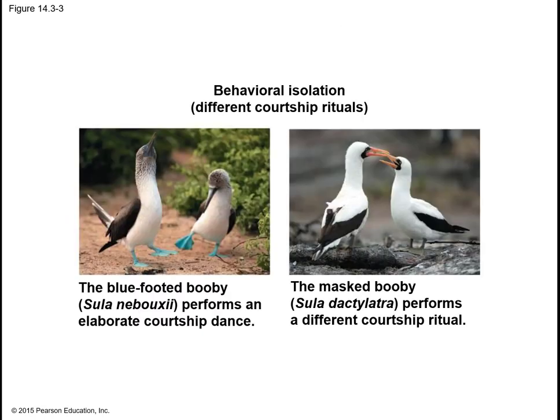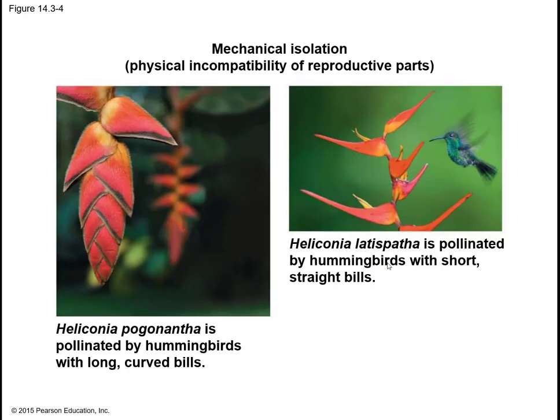For habitat isolation, one snake is clearly located in the water and one is on land, so it's very hard for those two to encounter one another. For temporal isolation, the eastern spotted skunk breeds in late winter and the western breeds in the fall. For behavioral isolation, the blue-footed booby performs an elaborate courtship dance, while the masked booby on the right performs a different courtship ritual. For mechanical isolation, the Heliconia pogonatha is pollinated by hummingbirds with long, curved bills, whereas the Heliconia latispatha is pollinated by hummingbirds with short, straight bills.